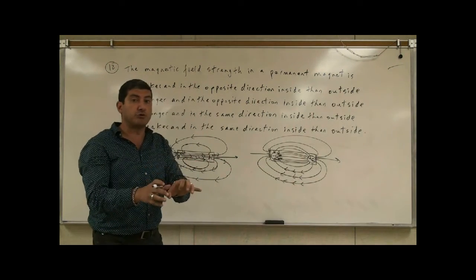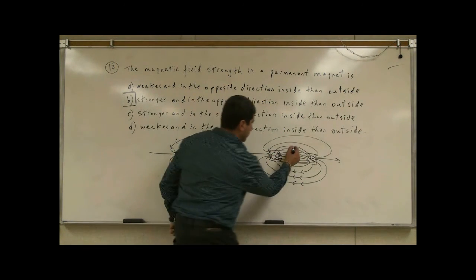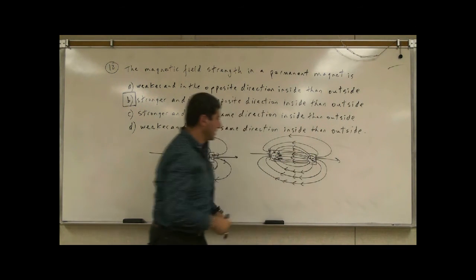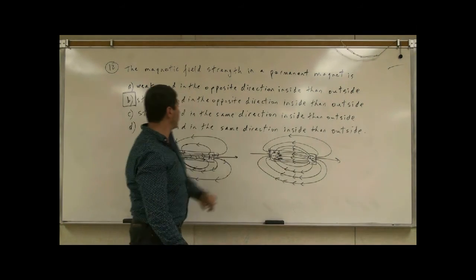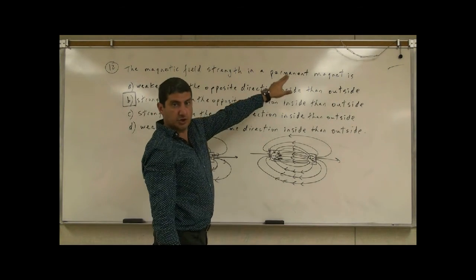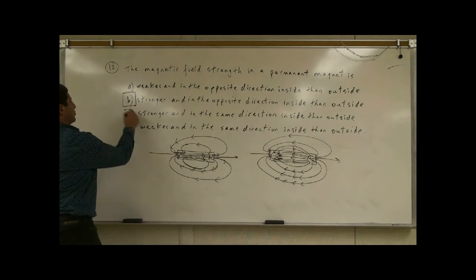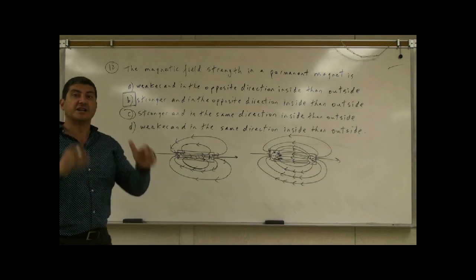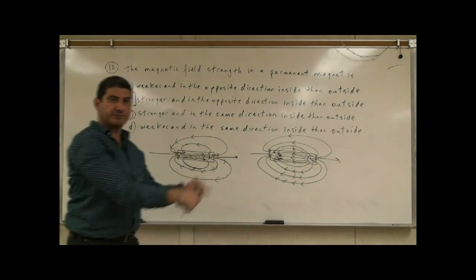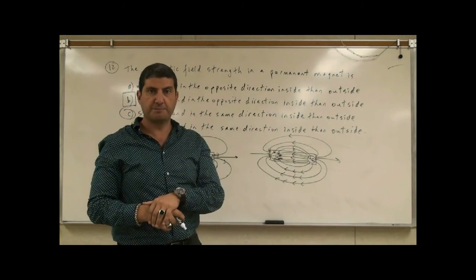Outside the dipole, the field points this way; inside, the electric field lines are also in the same direction — they are stronger and in the same direction. So if the question had been about the electric field lines of a dipole, the choice would have been C. Magnetic field lines are opposite because they make a complete loop. This shows you the differences between how magnetic fields and electric fields behave. Thank you very much.